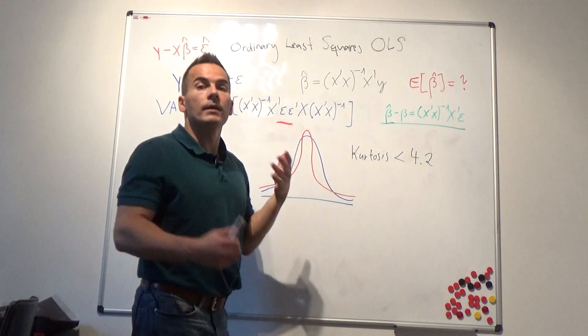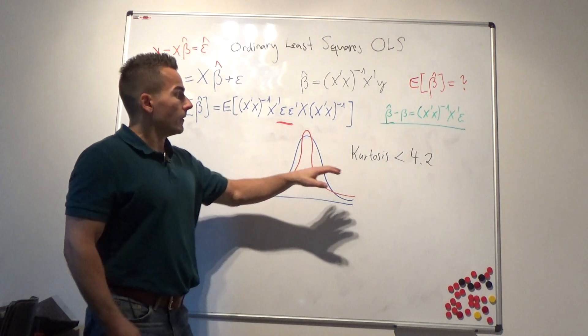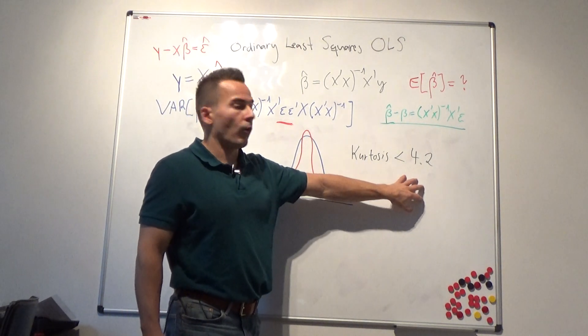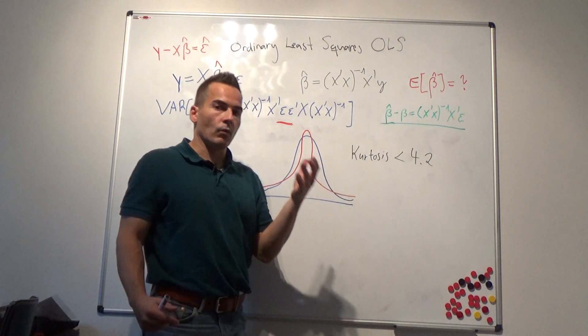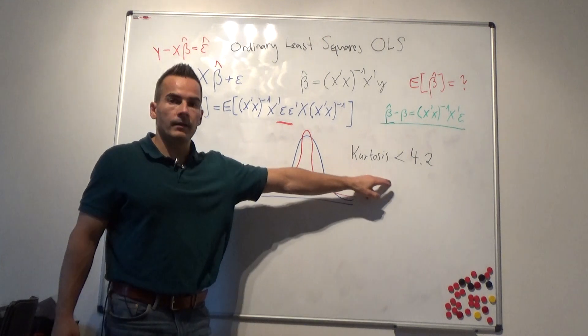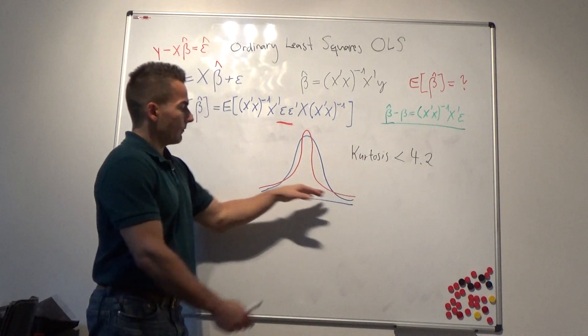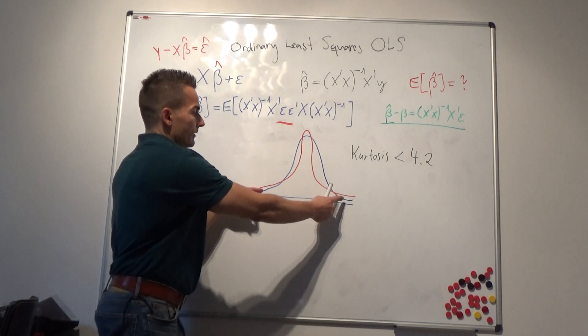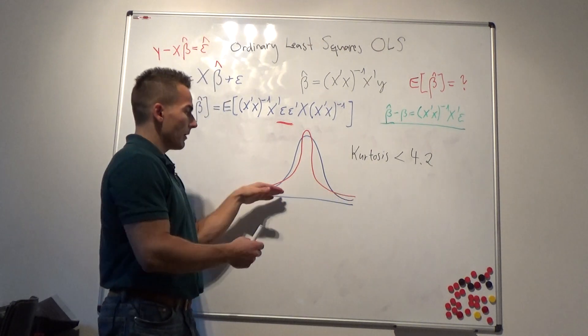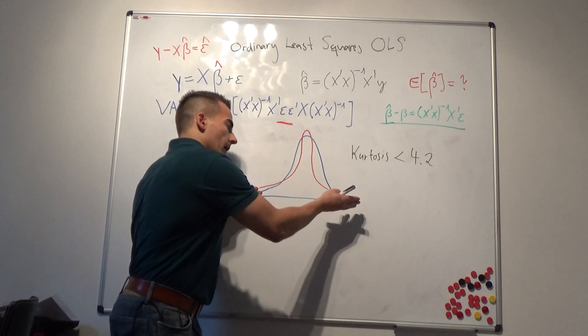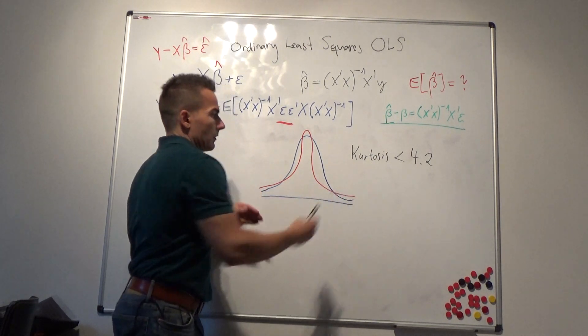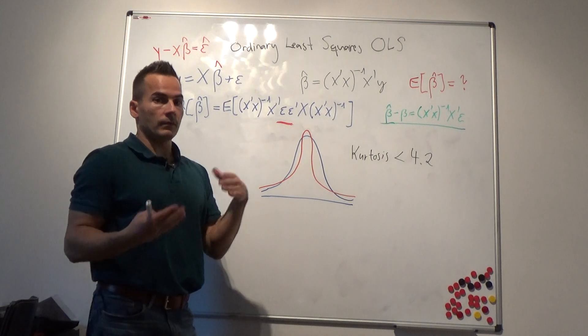And in what follows, in this course here we will assume that we have a kurtosis of less than 4.2. You might remember that the normal distribution has a kurtosis of three. Whenever the kurtosis is larger than three, we have a little bit fatter tails than the normal distribution, so we have more probability mass. The likelihood of outliers, of extreme observations, is higher.